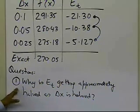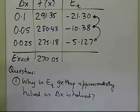why is the true error getting approximately halved as delta x is being halved? And keep in mind, this is not coincidental. This will happen in almost every case, that as you keep on decreasing your delta x, halving the delta x, the true error is also going to be halved.